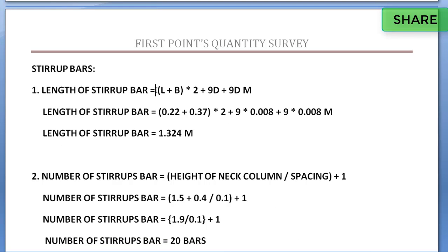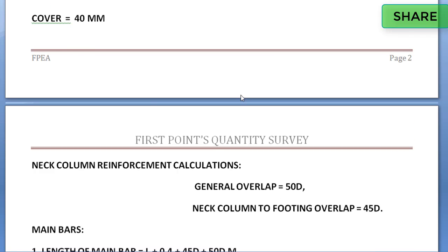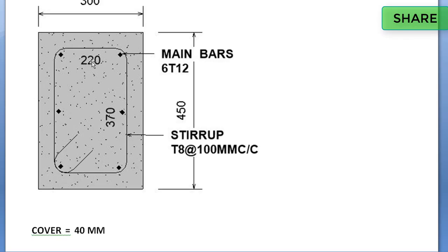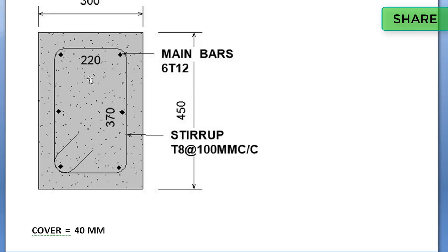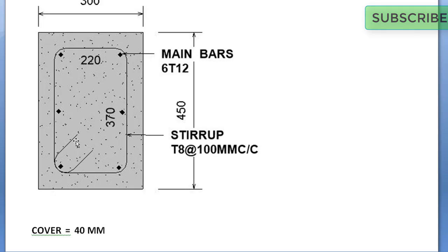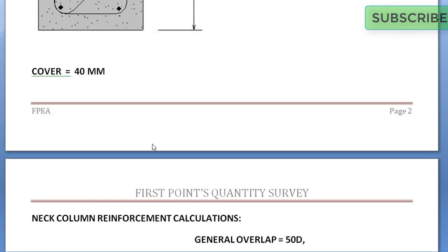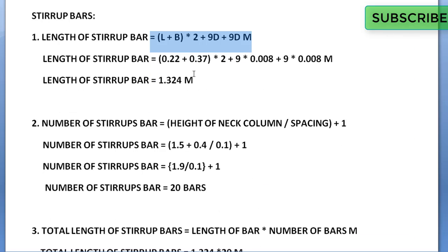Now we calculate the stirrup bars. The length of stirrup bar formula is (L plus B) into 2 plus 2 hooks, where one hook value is 90 mm. So the formula is (length plus breadth) into 2 plus 2 hooks. Substituting the values, the length of the stirrup bar is 1.324 meters.